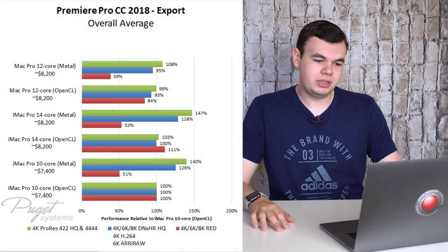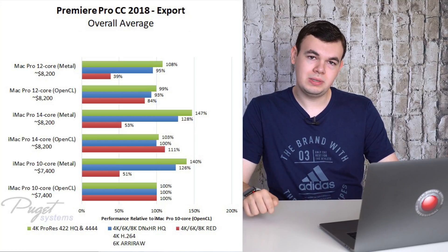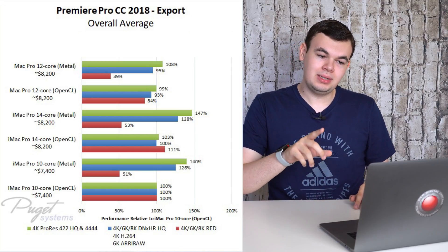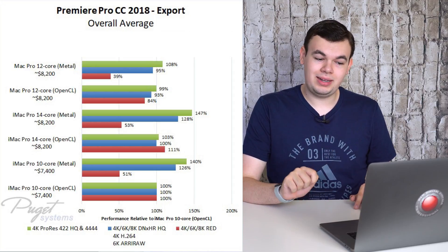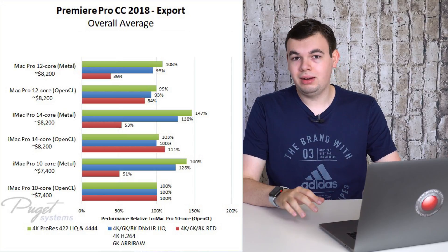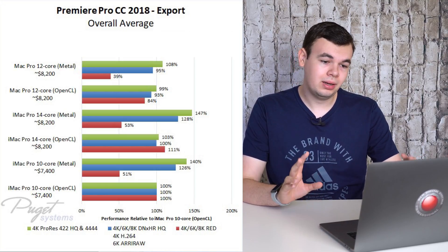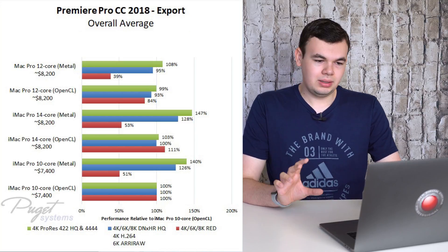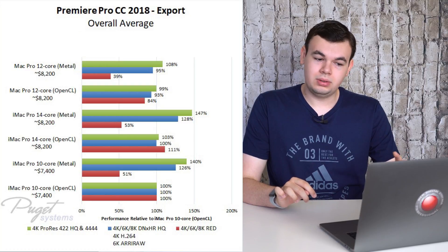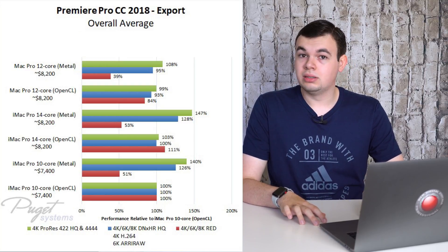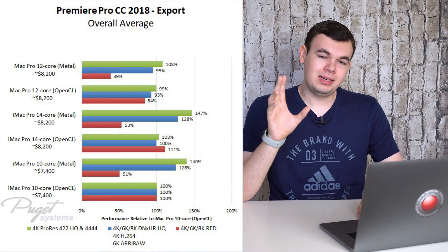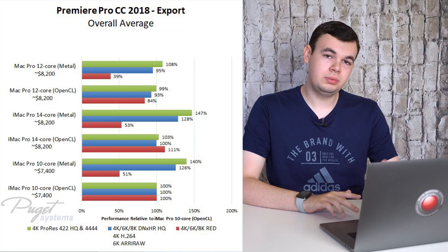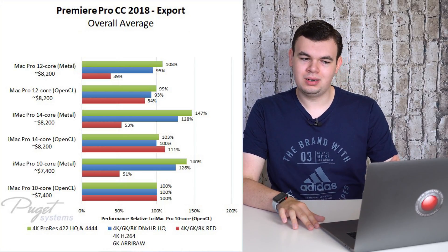Taking a look at export with these same machines, again compared to the 10-core OpenCL iMac Pro, what's really interesting is that Metal actually performs better than OpenCL at exporting ProRes. Using edit-ready formats and codecs is much better when exporting with Metal. We also see improvements with H.264 and DNxHR on export with Metal. However, for RED raw footage, we only get 50% performance on the 10-core iMac Pro when using Metal compared to OpenCL, and that's similar across all other Macs.